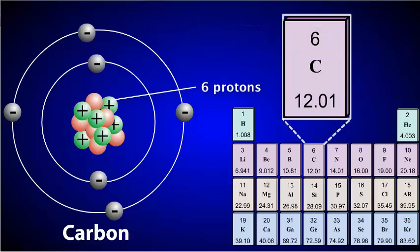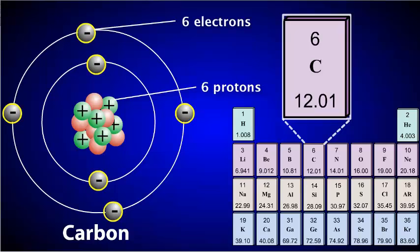In an atom of carbon that is neutral, there must also be six electrons. This is because the positive charge of carbon's protons must be balanced by the negative charge of carbon's electrons. Because electrons and protons have an equal and opposite charge, there must be an equal number of both protons and electrons in a neutral atom of an element.